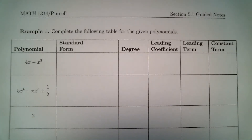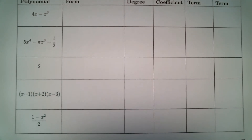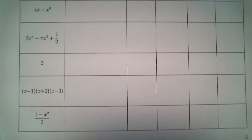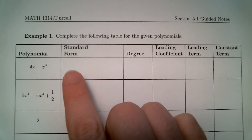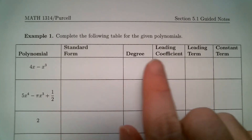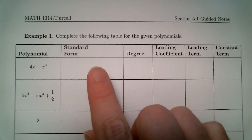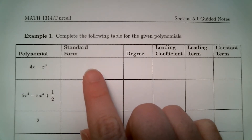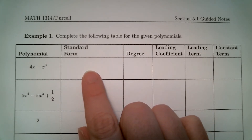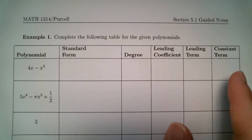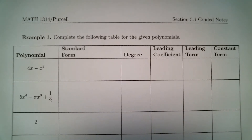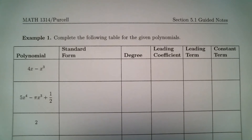In example one, we are going to complete the following table for the given polynomials. Basically, if you look at this table, there are five different polynomials listed here. We are going to talk about why each one is considered to be a polynomial, and then go through the terminology you usually hear associated with polynomials.